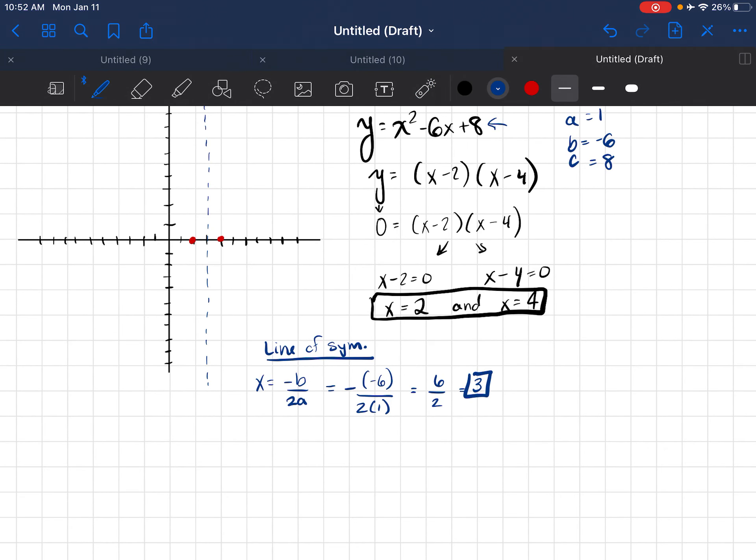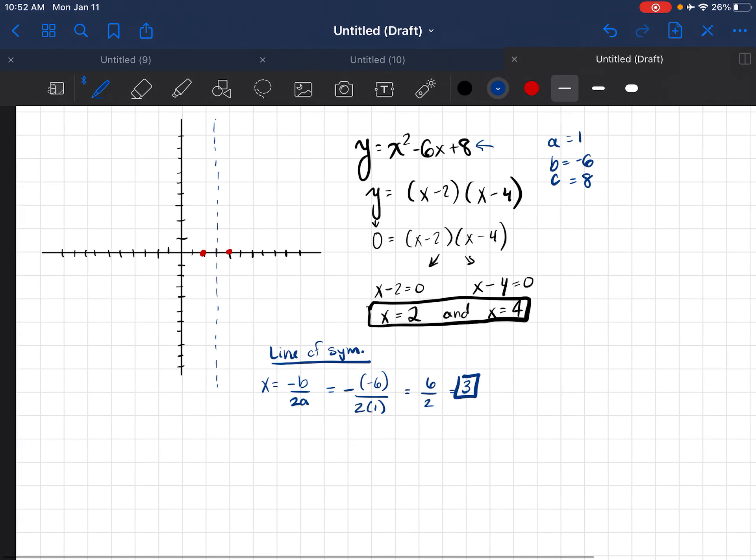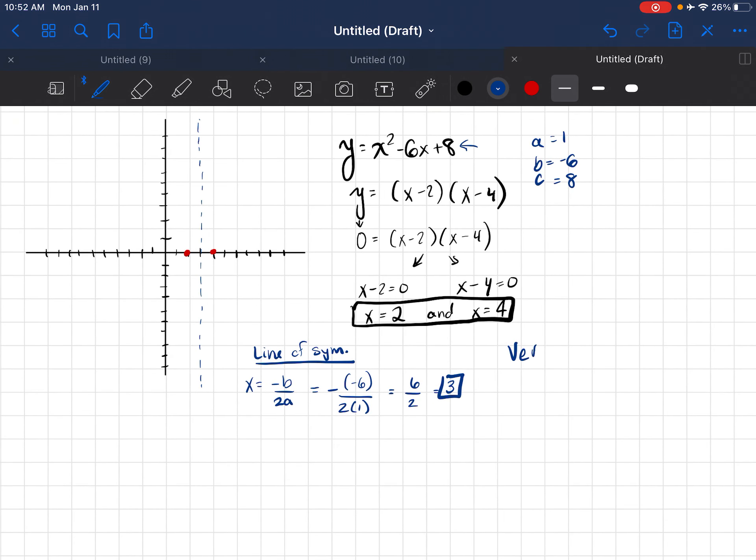So now that I have found my line of symmetry, the next step is to find the vertex. I'm going to do this in a different color. Now I know that the vertex is going to be on this line of symmetry. And to find it, I'm going to use this value of x in the equation that I have from the beginning.